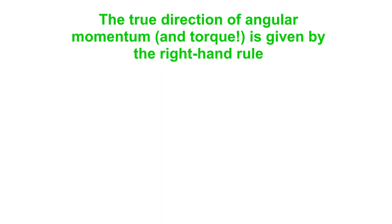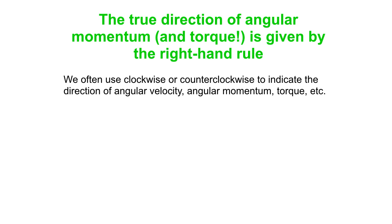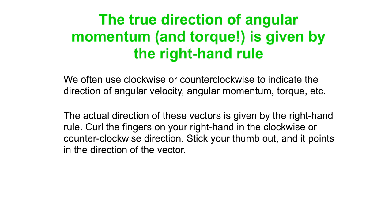One other thing to note: we often talk about clockwise and counterclockwise when discussing directions of angular momentum, angular velocities, or torques. But you can use your right hand to determine the true direction. It's not really clockwise or counterclockwise — it's along a particular direction in space. Using the right-hand rule, curl the fingers of your right hand in the direction the object is spinning, or in the direction the torque or angular momentum is going, then stick your thumb out — it points in the direction of the vector. For example, if a disk is rotating counterclockwise, you curl your fingers counterclockwise and your thumb points towards you, out of the screen. So the true direction of the angular velocity and angular momentum is out of the screen.